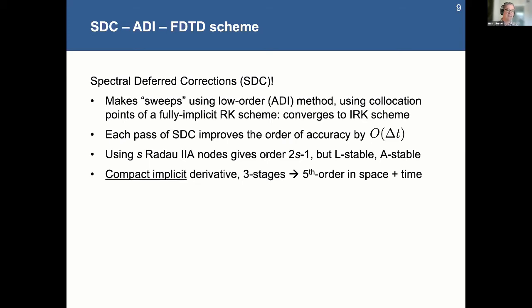For example, I can do a compact implicit derivative, which is a whole other talk, but basically something you can use in this line solve to get high-order accuracy in space. I pick a Radau scheme that has three stages, so three collocation points, which gives me fifth order in time. So together I can get fifth order in space and time in conjunction with a six times parallelism in the splitting.